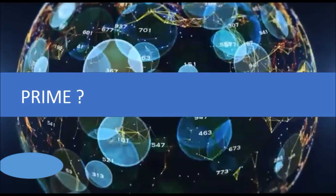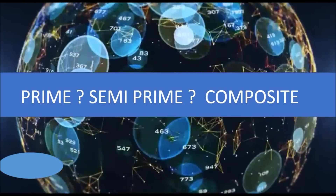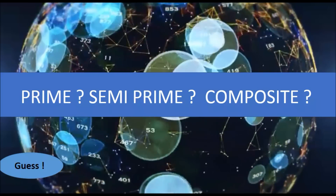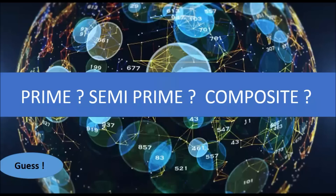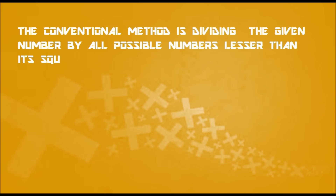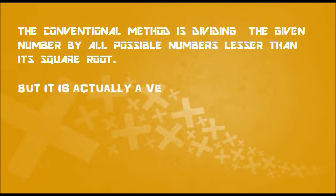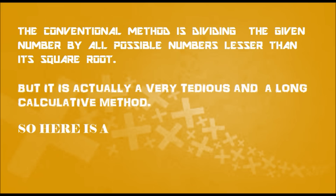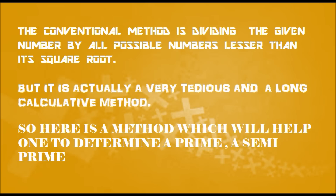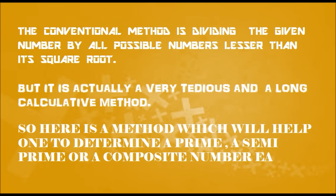Are these prime, semi-prime or composite? The conventional method is dividing the given number by all possible numbers lesser than its square root. But it is actually a very tedious and long calculative method. So here is a method which will help one to determine a prime, semi-prime or a composite number easily.